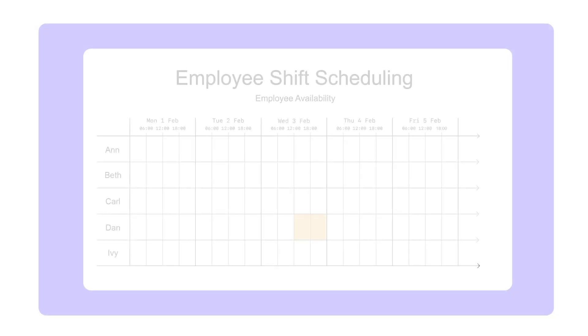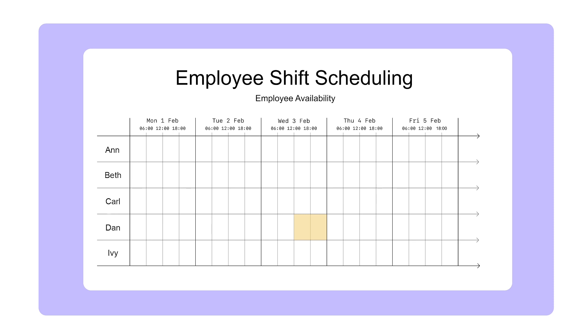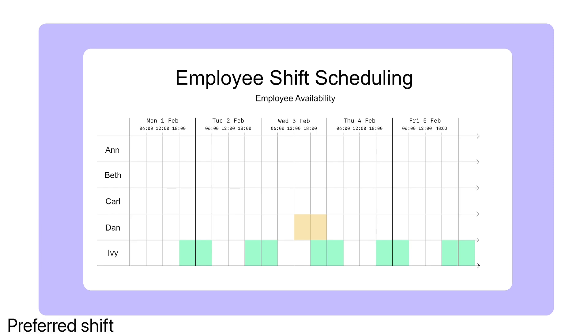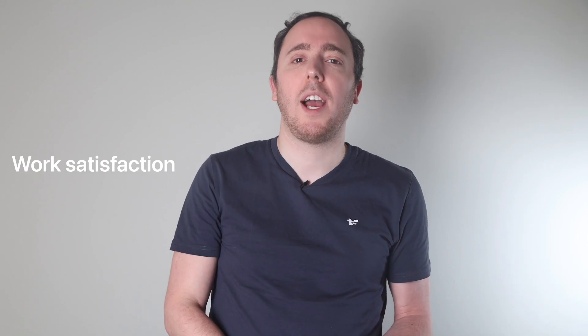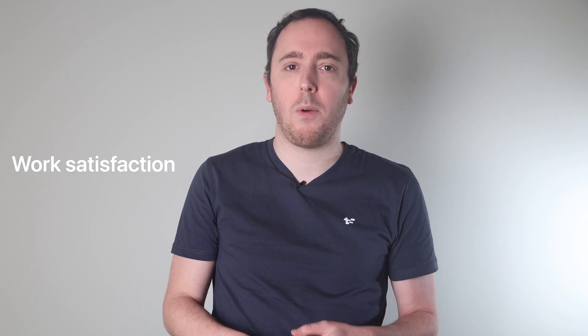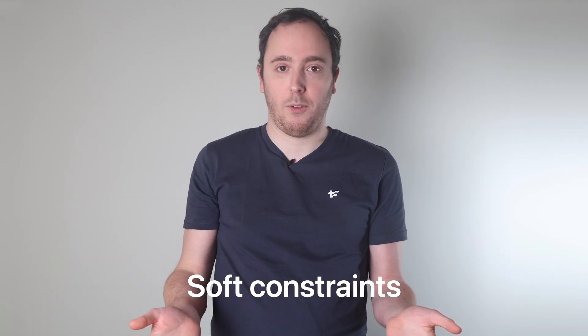Availability isn't always black or white. In some cases, employees would prefer to be assigned to a certain shift, while others might prefer not to be assigned to that same shift. For example, Dan would prefer not to work the late shift on Wednesdays, because that's when he has soccer practice. Ivy, on the other hand, is a bit of a night owl and prefers to work the night shifts. While assigning an employee to an unpreferred shift doesn't make the schedule infeasible, it does affect work satisfaction and might even affect performance. These preferences are soft constraints.